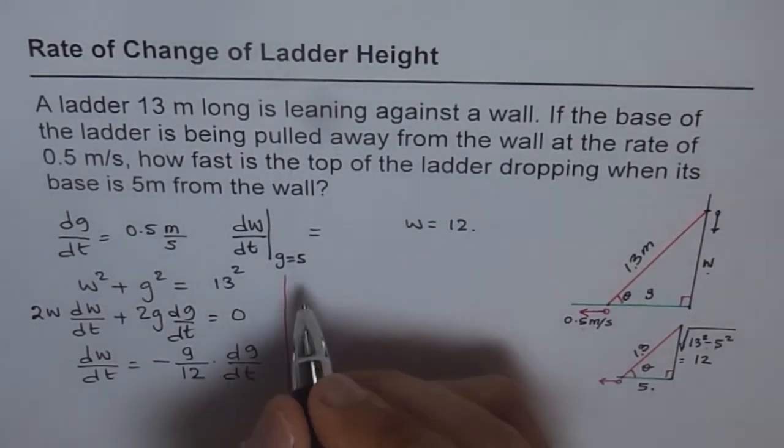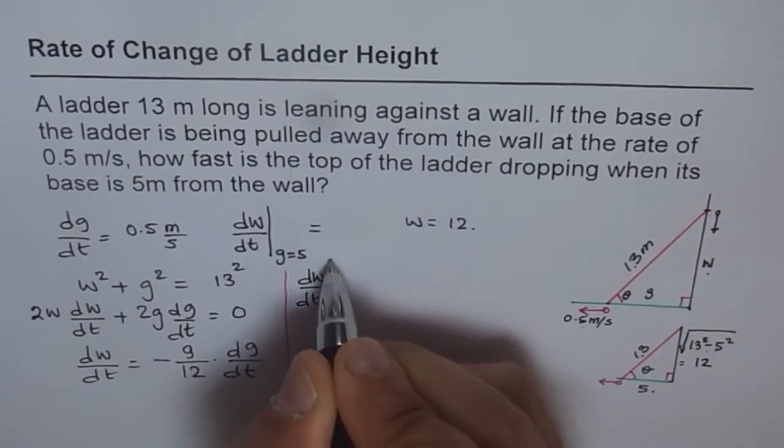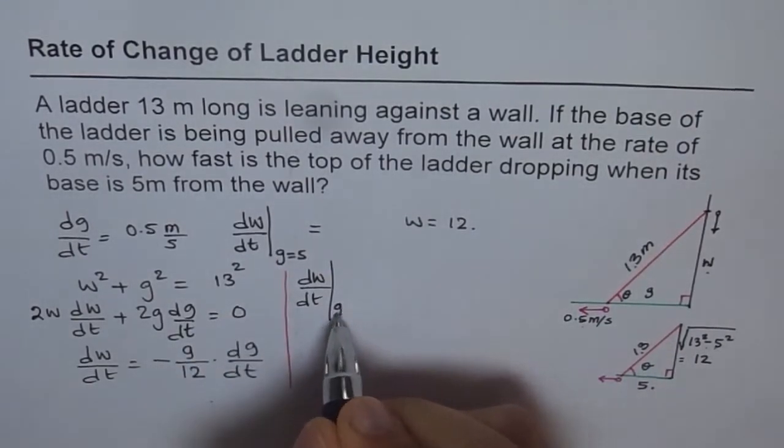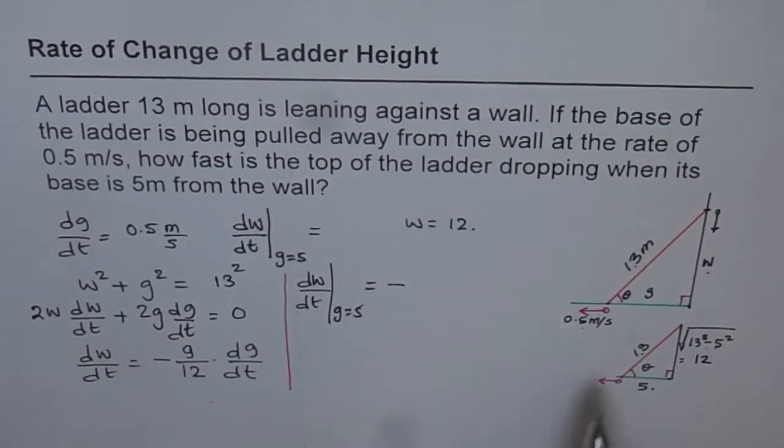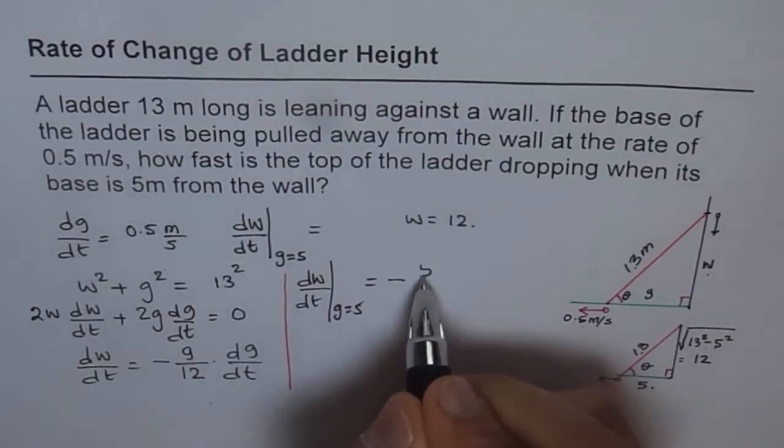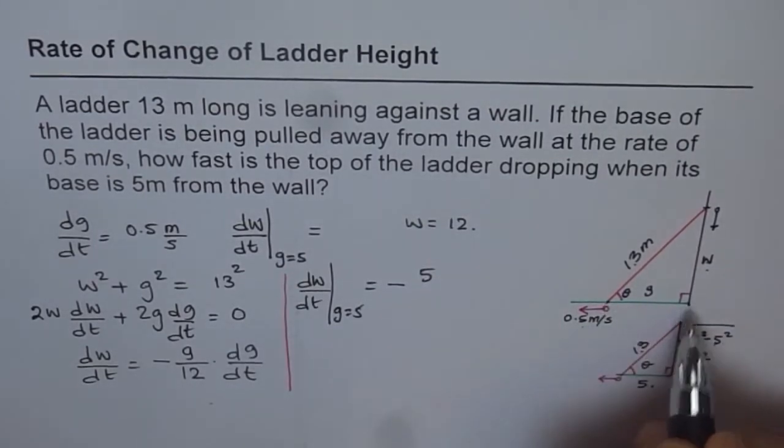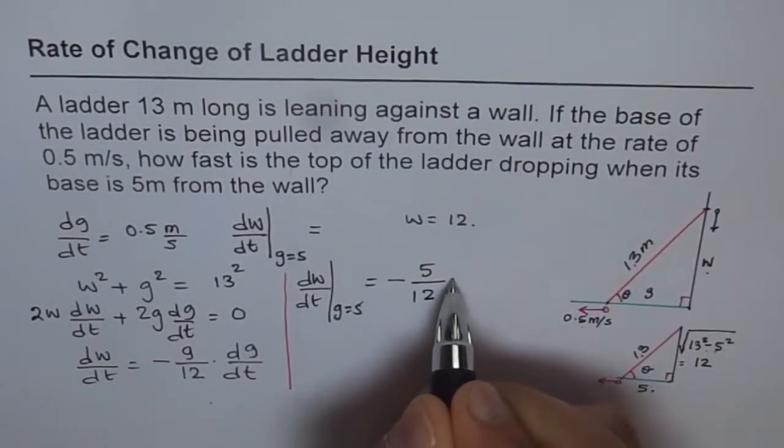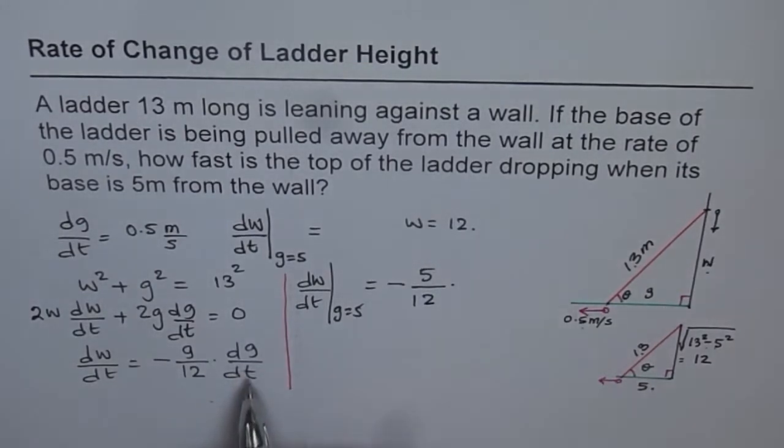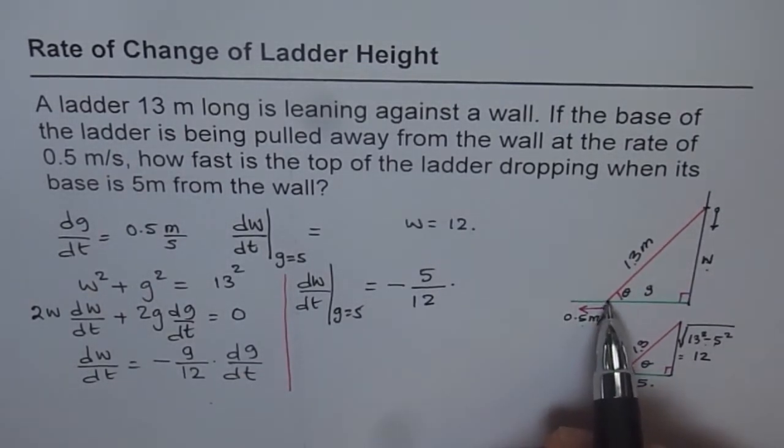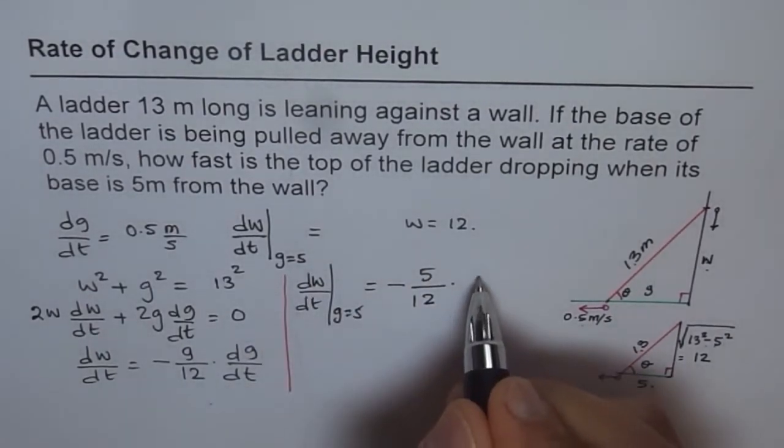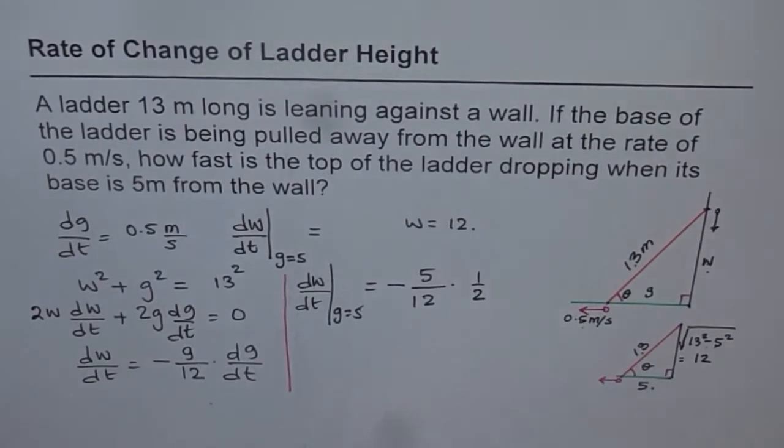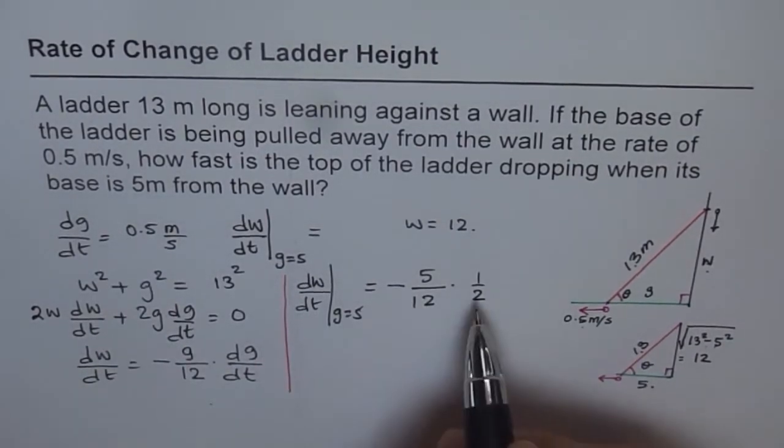We get dW/dt when G equals 5 equals minus - the value of G is 5, given to us when the foot is 5 meters from the wall - divided by 12 times dG/dt, which is the rate of change at which it is sliding away. That is 0.5, or let us write it as half. It is easy to calculate with that. Times half. 0.5 is as good as half.